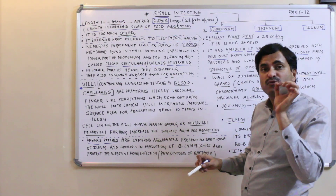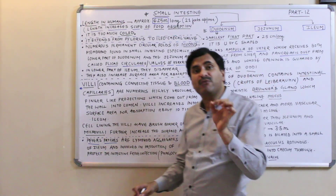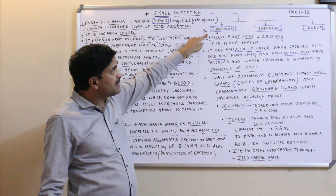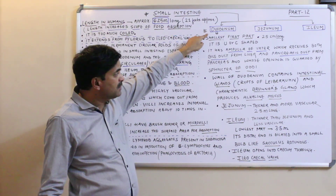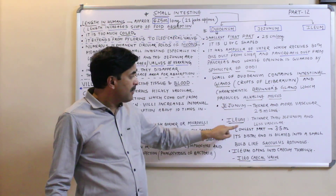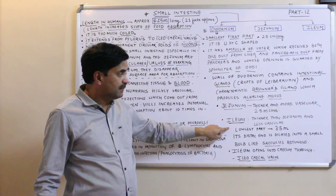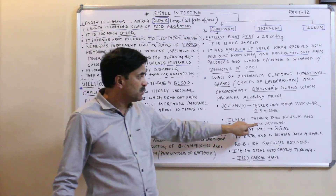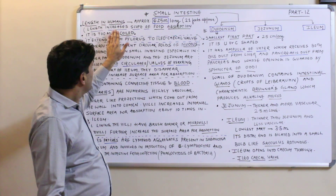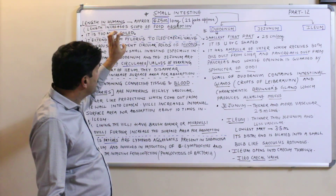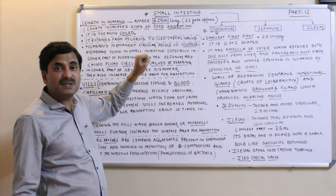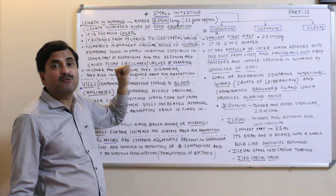That is approximately twenty to twenty-one feet long. Out of this, the duodenum part is 25 centimeters long, the jejunum part is 2.5 meters long, and the ileum part is 3.5 meters long, making a total of six point two five meters. The greater length of the small intestine increases the scope for food absorption.